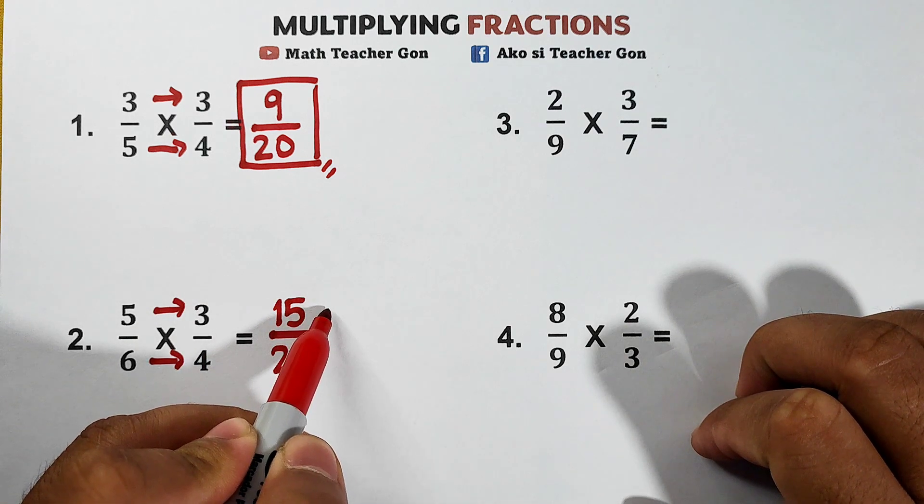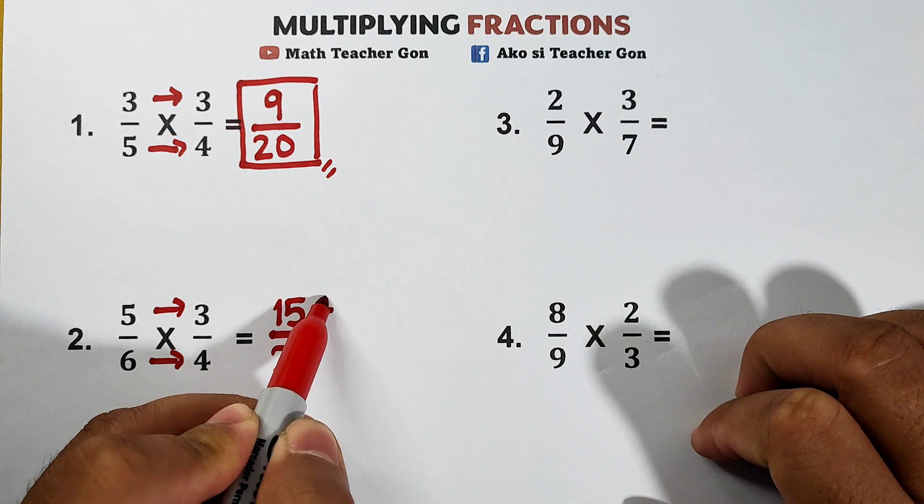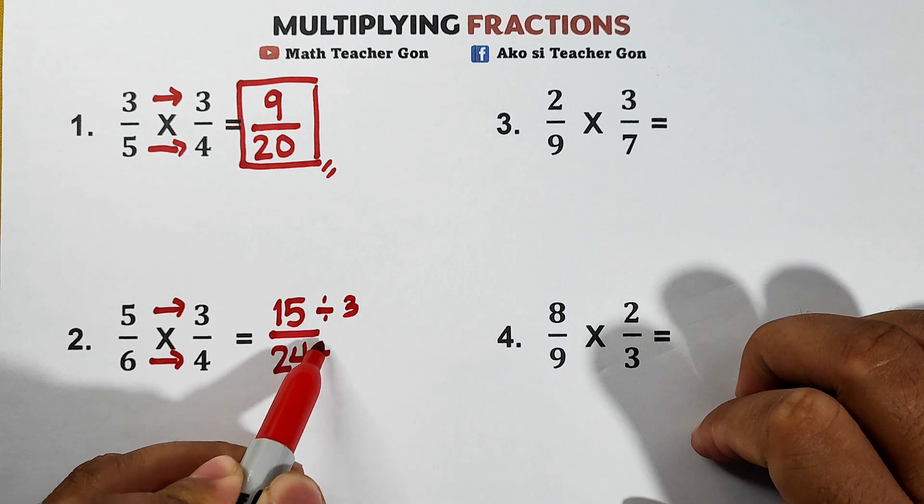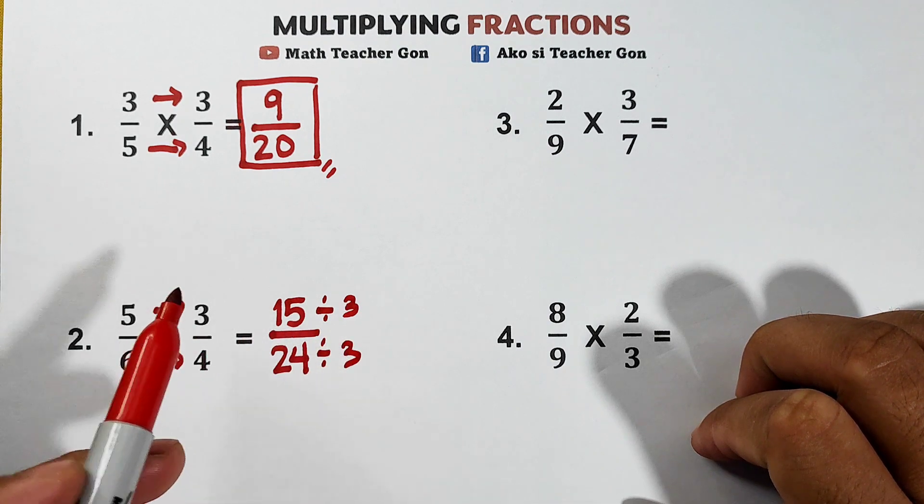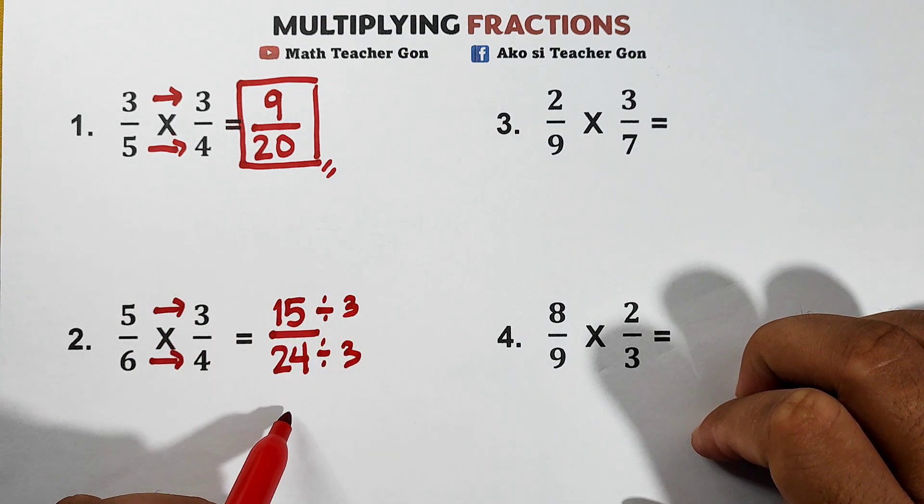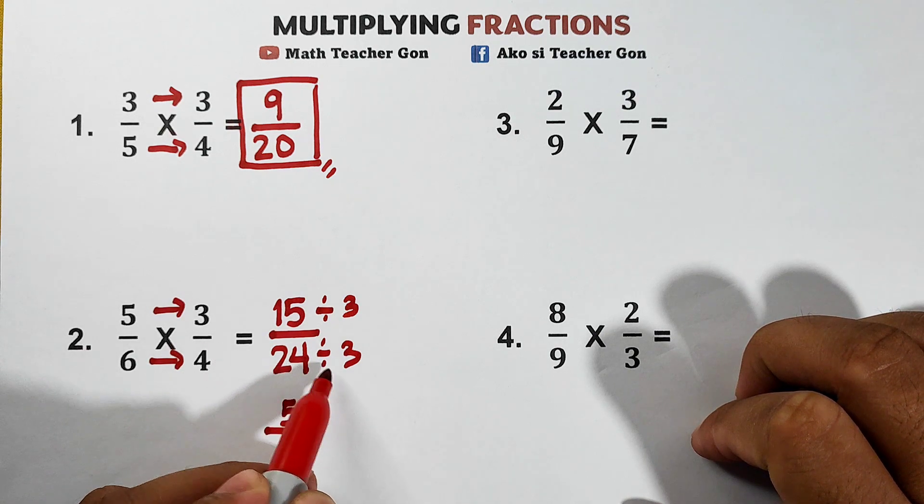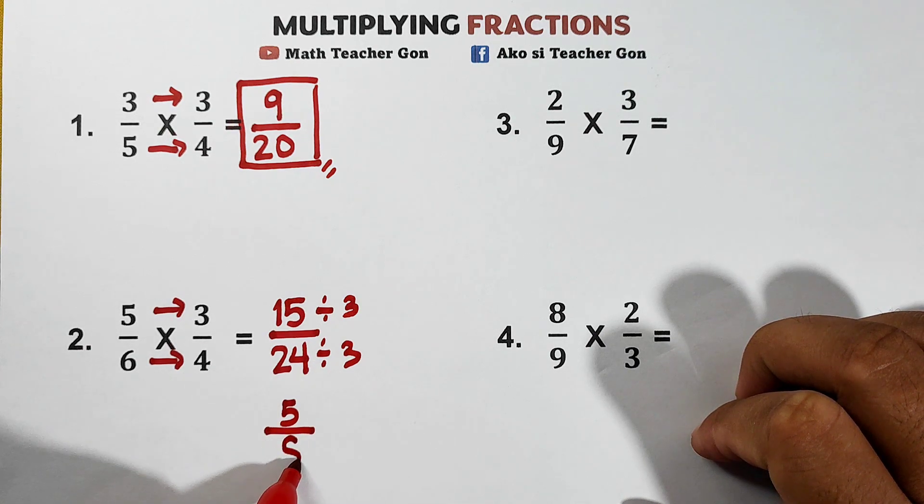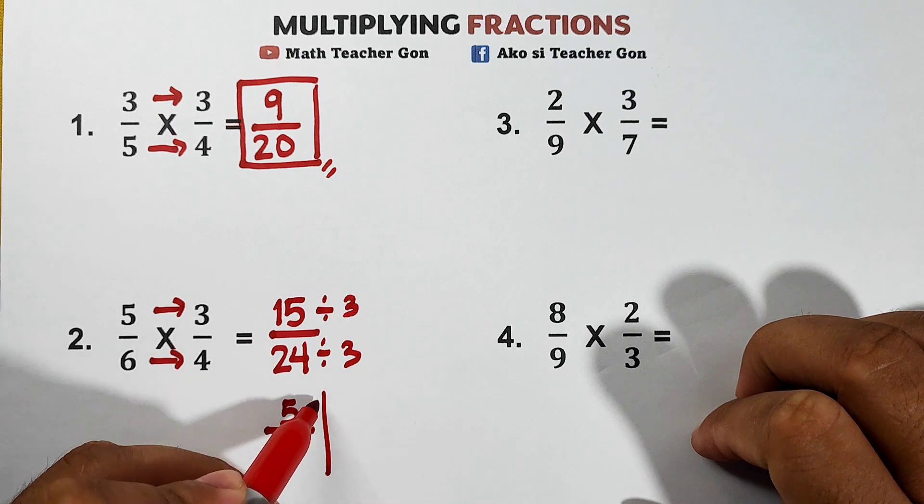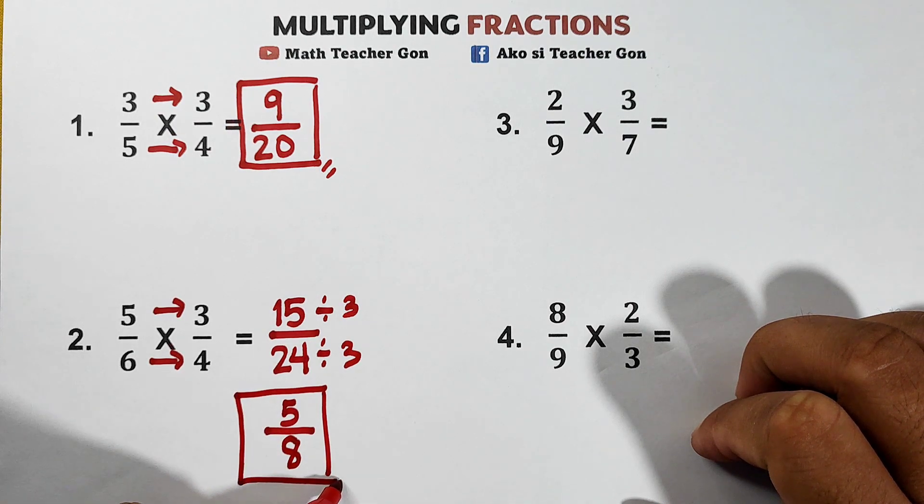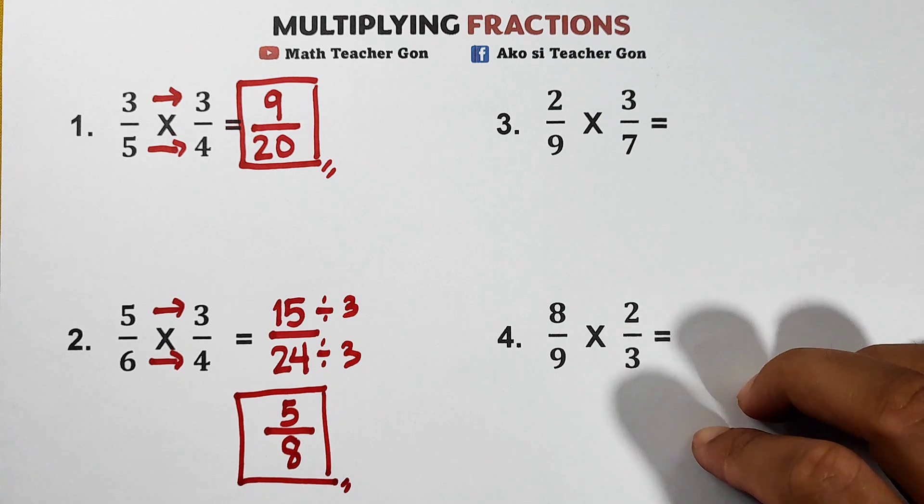Meaning, we need to divide this fraction by 3. 15 divided by 3 is 5 over 24 divided by 3 which is equal to 8. And this is now the simplified form of example number 2.